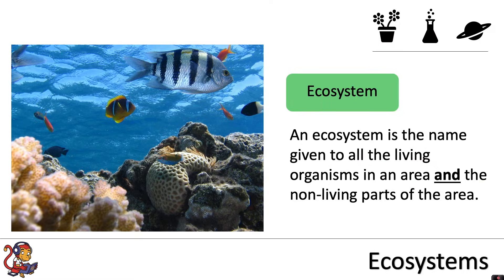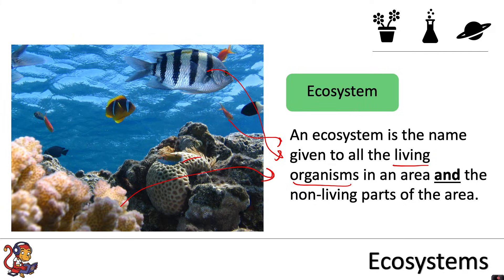An ecosystem is the name given to all the living organisms in an area and the non-living parts of the area. So if we were to look at this aquatic ecosystem, we need to be looking at all the living organisms — so all the different species of fish, the corals and the seaweeds and the sponges that live on the rocks.